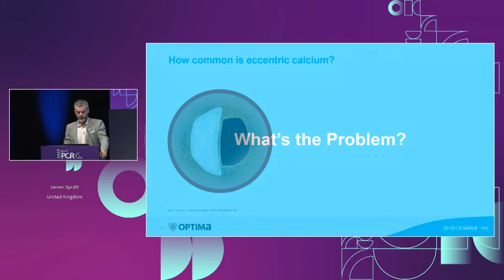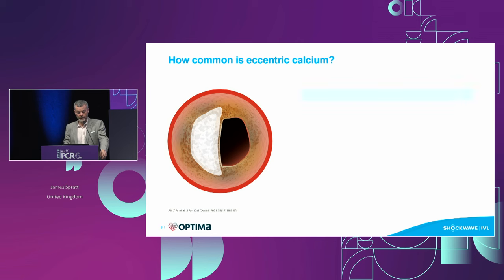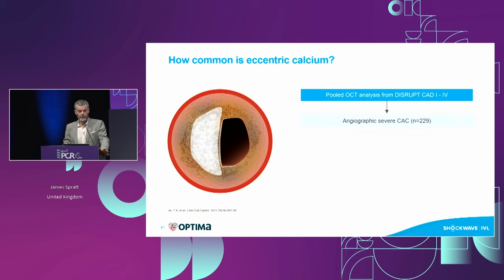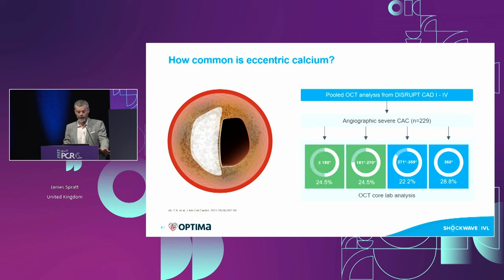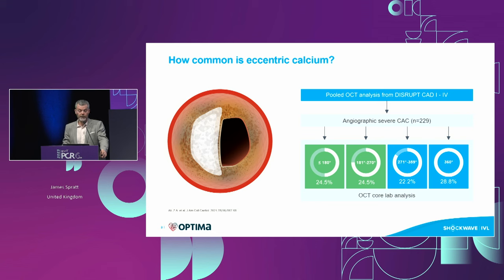So what is the problem of eccentric calcium and how common is it? Looking at the pooled analysis from the DISRUPT series of studies, this is a preselected group with severe calcium, and in about half the cases there was eccentric calcium. So in your cases, it's the commonest morphology you'll find. You'll also find concentric and nodular calcium, but eccentric calcium is really easy to find and up to now very difficult to treat.